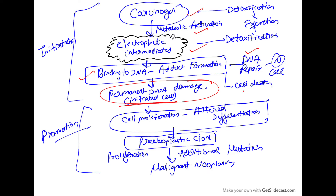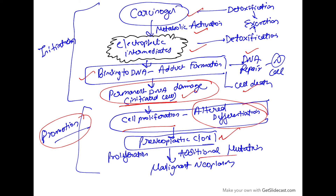Alternatively, there could be cell death — apoptosis. Some cells, however, will be mutated. Mutation alone does not cause cancer; we require a promoter. The next phase is promotion, where there is cell proliferation and altered differentiation, forming pre-neoplastic clones, and with additional mutations it turns into a malignant neoplasm.